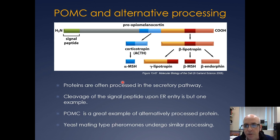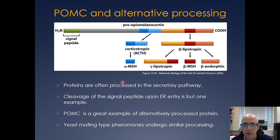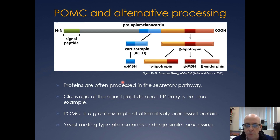Another thing that happens in the secretory pathway, which is very, very important, is protein processing. Occasionally a protein will get processed as it goes through the secretory pathway. We've already seen how glycosylation can occur, but occasionally a protein can encode multiple proteins and it can get cleaved in the secretory pathway.